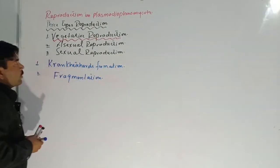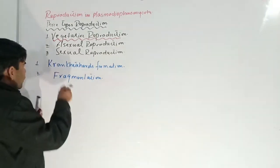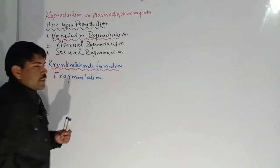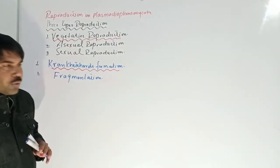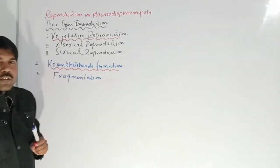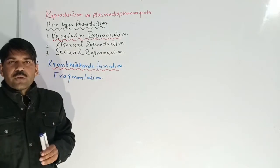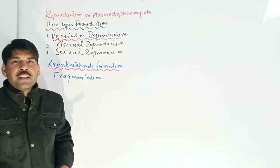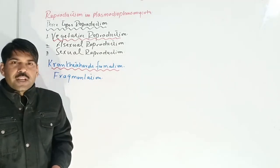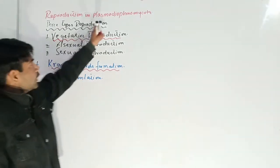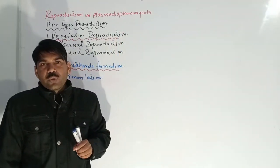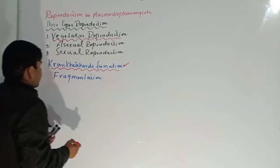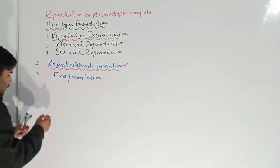In vegetative reproduction, we will first discuss crinkled cell formation and how it is involved in the vegetative reproduction of Plasmodiophora. The fungi belonging to Plasmodiophora are obligate parasites — parasites which need a living host for their reproduction. All members of this division are obligate parasites living inside the host cell.